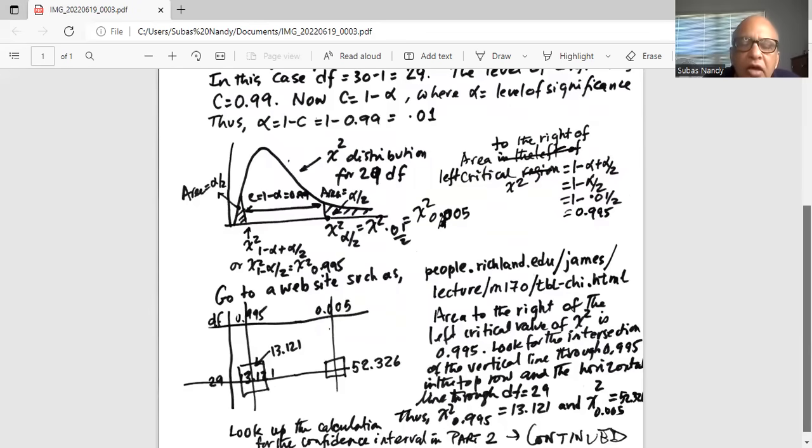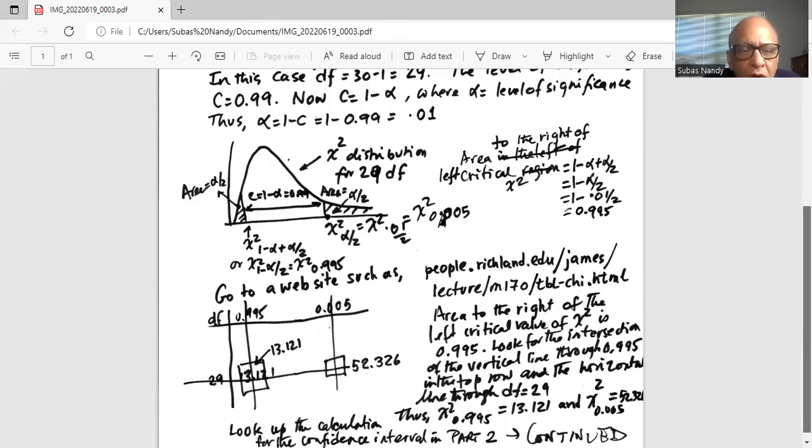In the first column of the table, you will find the degrees of freedom. Our degrees of freedom is 29. Also notice the chi-square 0.995 area is on the top row. Chi-square 0.995 means area to the right of that critical value is 0.995 under the curve.